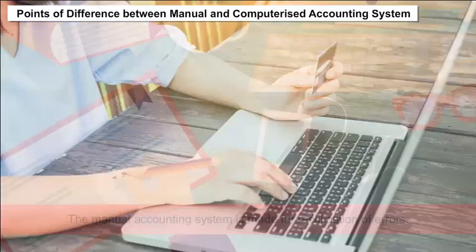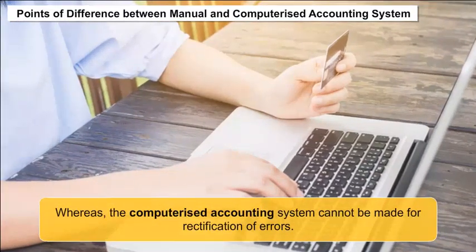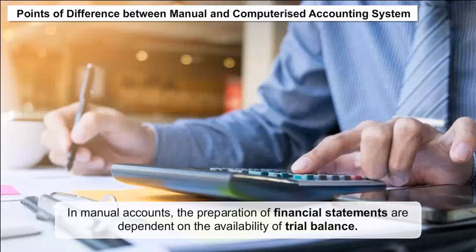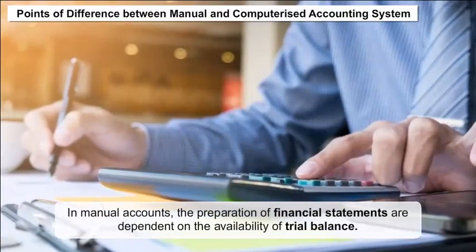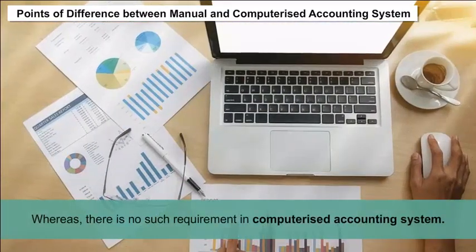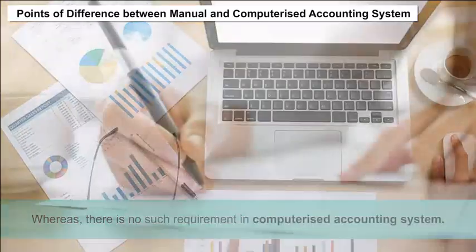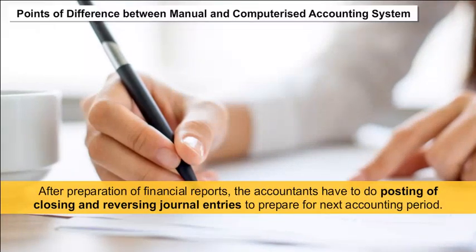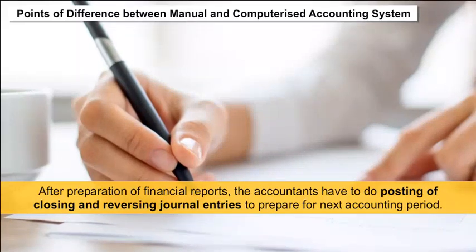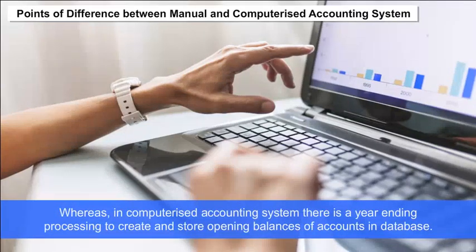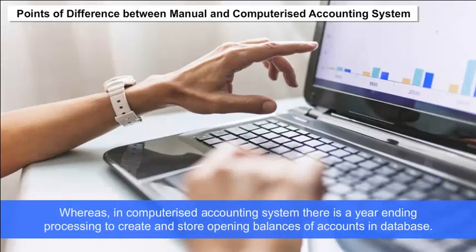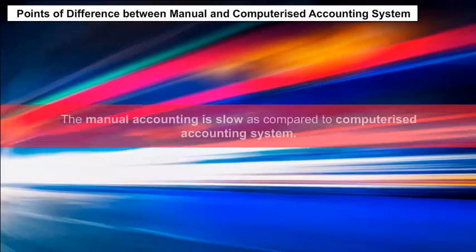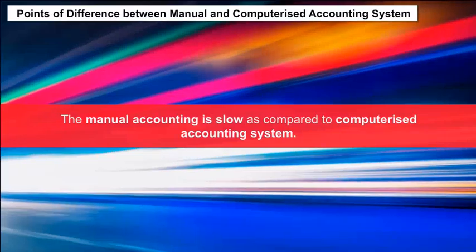Adjusting entries: the manual accounting system allows rectification of errors, whereas the computerized accounting system cannot be used for rectification of errors. Financial statements: in manual accounts, preparation of financial statements depends on the availability of a trial balance, whereas there is no such requirement in computerized accounting. Closing the books: accountants must post closing and reversing journal entries for the next accounting period, whereas in a computerized accounting system there is a year-end processing to create and store opening balances in the database. Speed: manual accounting is slow compared to computerized accounting.